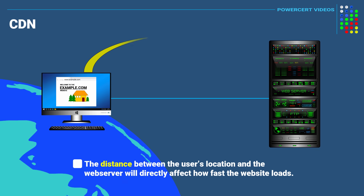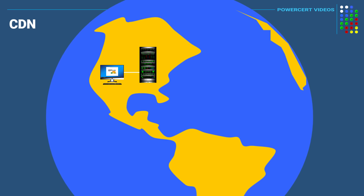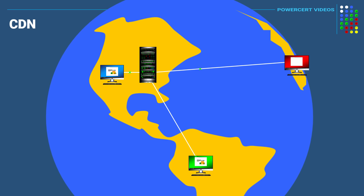Depending upon the distance between your location and the origin web server, it will directly affect how fast the website loads on your device. For example, if the origin web server is located in the USA and you are also located close by in the same country, the website is going to load fast because the distance is short. But if you are located in a different area such as South America, the website will take longer to load. Or if you're in Europe, which is even further, the website will take even longer to load.